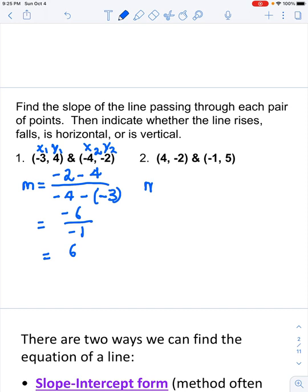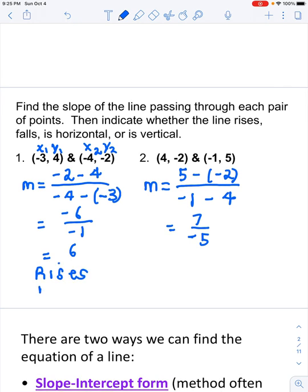For my second pair, I am not going to label them. And remember, it doesn't really matter which point you start with in the numerator for y, as long as you are consistent and start with the same point in the denominator for x. So I have 5 minus a negative 2 over negative 1 minus 4. This time, it looks like I get 7 over negative 5. And in the first case, the slope of the line was positive, which tells me the line is going to rise from left to right. And in the second case, my slope value is negative, so that tells me the line falls to the right.